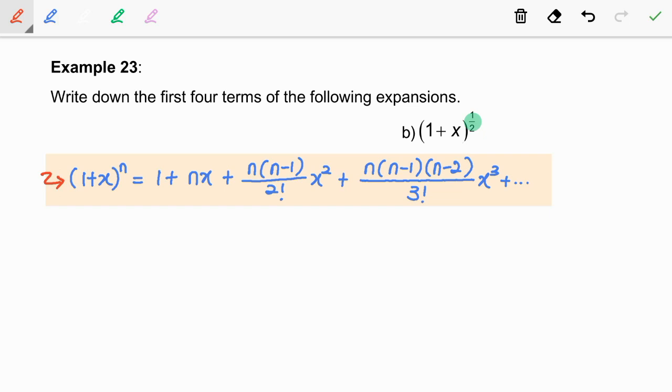Now, let us find x and n by comparing 1 plus x to the power of half with 1 plus x to the power of n. We clearly see that x is equal to x and n is 1 over 2. Now, we are going to substitute x and n into the binomial formula.